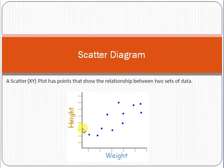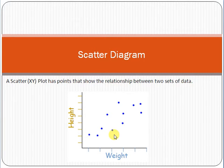Once you draw the relationship — once you draw the diagram, you can draw this diagram using Excel as well, and some other software is also available. Just try to plot the graphs using weight and height and you can see some relationship between the person's height and person's weight. Whenever we want to understand the trend or the relationship between two sets of data, we draw the scatter diagram.